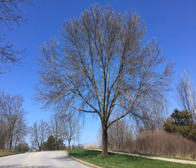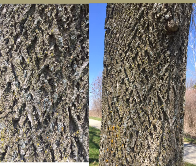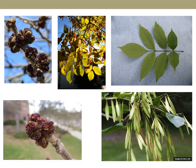Before we get any further, let's take a moment and learn how to identify ash trees. Ash trees have opposite branching and very thick twigs compared to other tree species. The bark has very distinctive deep diamond-shaped grooves. Ash trees have compound leaves with five to eleven leaflets. Their fruit are called samaras and are sort of shaped like oars. You also see here photos of the buds, which is what you'd see in springtime.